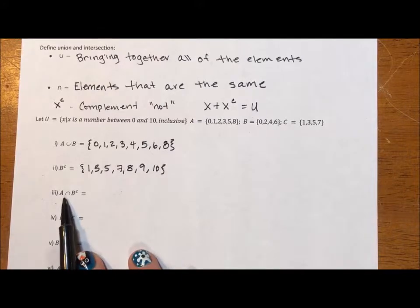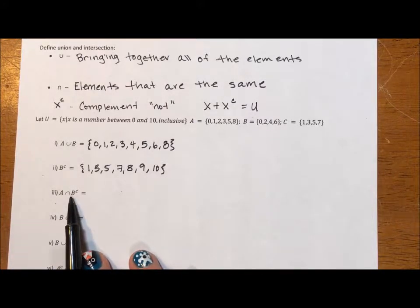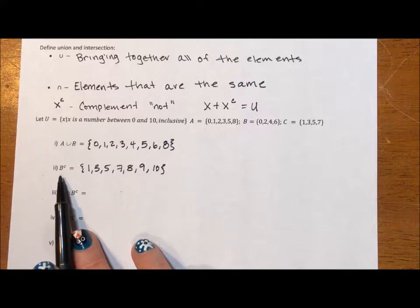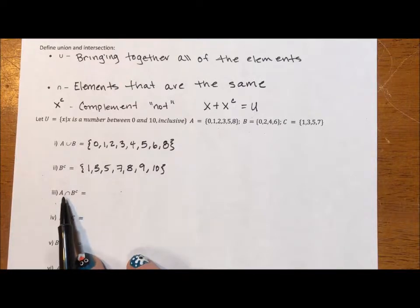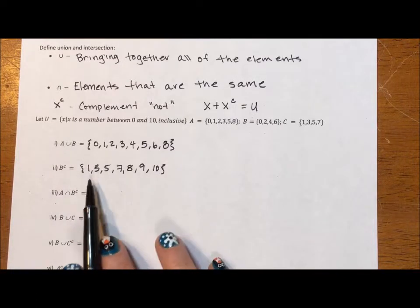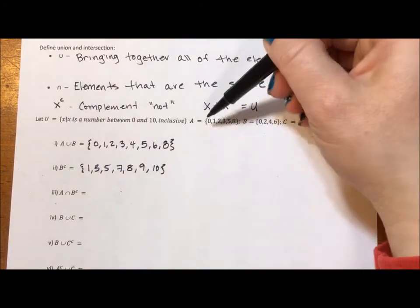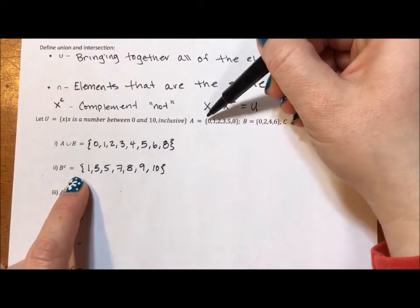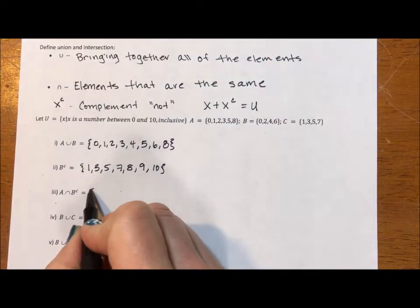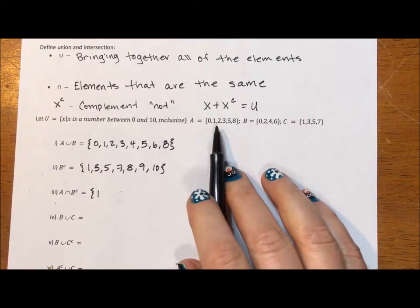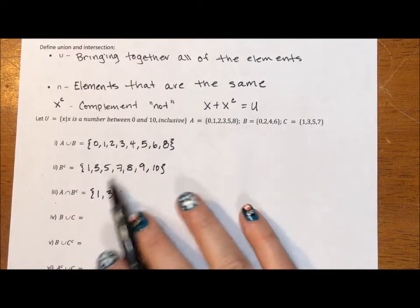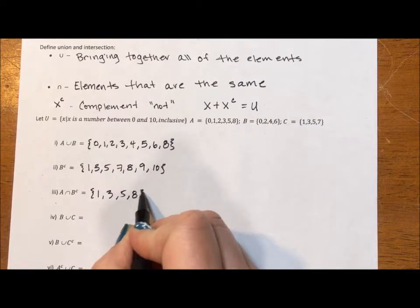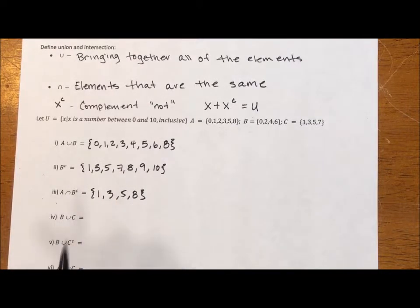This intersection says what is common. I would tell you to write out B complement had we not just written it out. It is much easier to write the sets out than try to do the mental gymnastics of keeping everything in your head. Intersection of A and B complement says what does this set and this set have in common. So A starts with 0. Nope, that's not common. 1. So 1 is common. 2, no. 3 is common. 5 and 8. And that's what the intersection is, what they have in common.